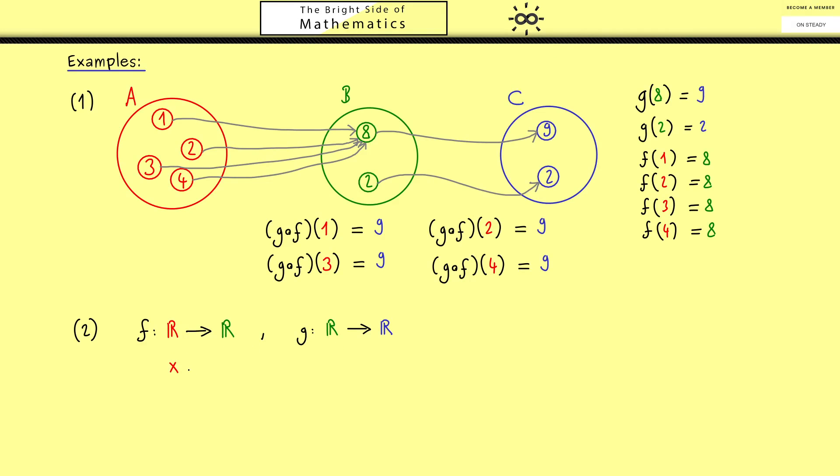And I want f to be the function that sends x to x squared, and g should be the function that sends x to the sine of x. Then the composition g after f makes sense and it is given for point x as x squared inside the sine function. We first square the number and then we apply the sine function.